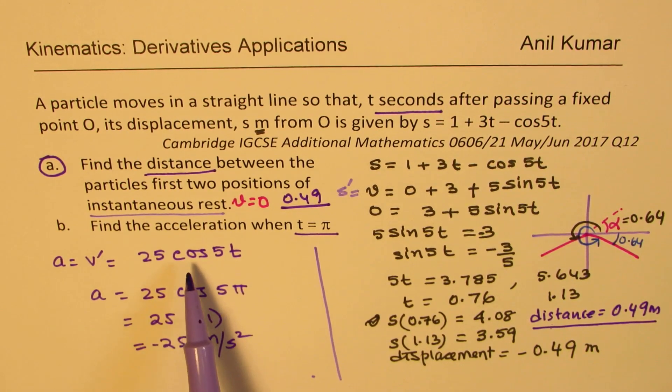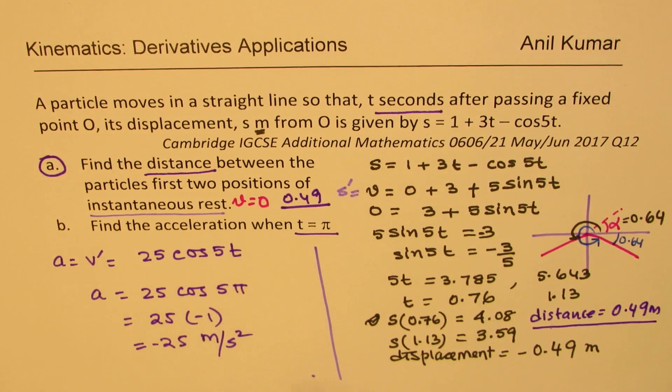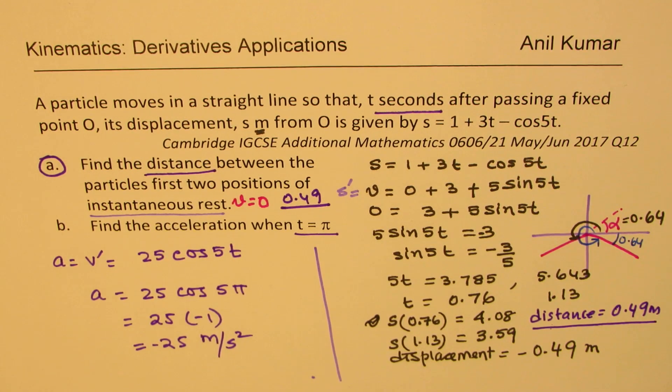The acceleration is derivative of velocity. Substituting π for t, we got the answer as minus 25 meters per second squared. So I hope that is absolutely clear. Feel free to share my videos, write comments, and if you like and subscribe to them that would be great. Also watch solutions of the complete test paper in my set of videos. Thanks for watching and all the best.